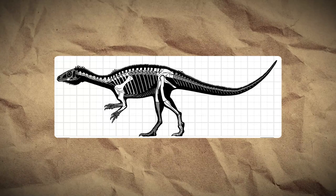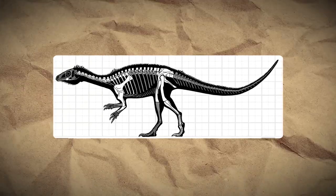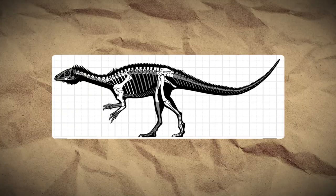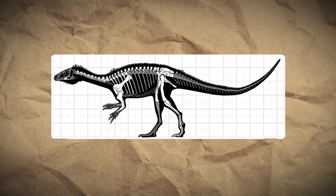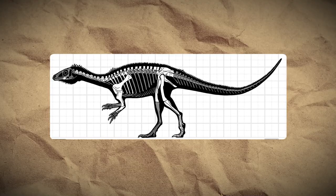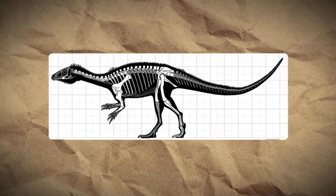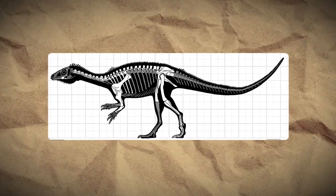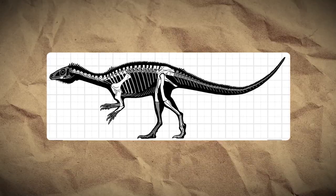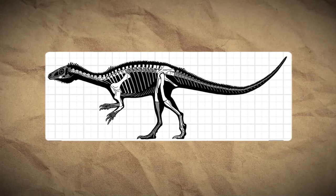One of the earliest known sauropodomorphs, Saturnalia, was small and slender — only about 1.5 meters or 5 feet long. By the end of the Triassic, sauropodomorphs were the largest dinosaurs of their time, and they just kept growing throughout the Jurassic and the Cretaceous.